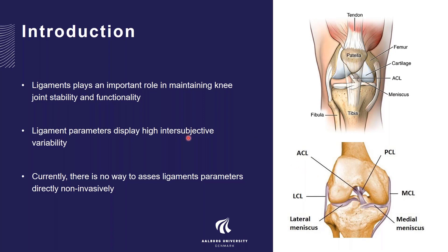It has been shown multiple times that the mechanical properties of these ligaments vary between subjects, and this has primarily been measured in dissections of cadavers — dissecting out the ligaments and then doing mechanical tests on them. The reason for this is that there is no way to assess ligament properties directly in vivo non-invasively. So today I will talk about the consequences of actually trying to assess them in vivo and what the effect of that is.